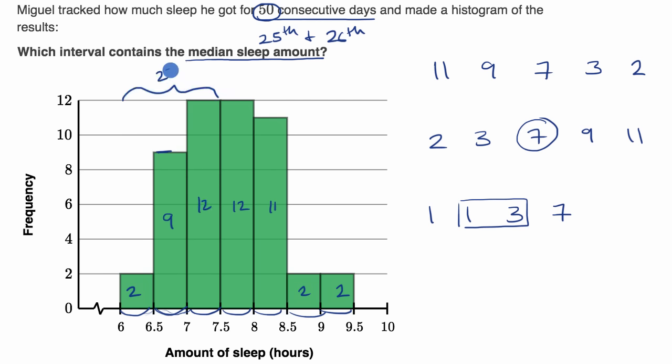And so the 24th, 25th, 26th, the next 12 data points starting from the bottom, starting from the lowest, are going to be in this next interval here. And we care about the 25th and the 26th, so they're definitely going to be in this interval from 7.5 hours of sleep to eight hours of sleep.